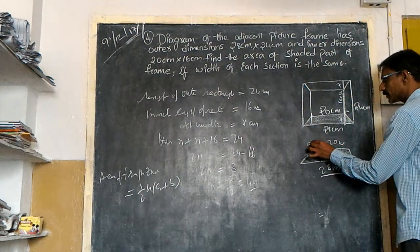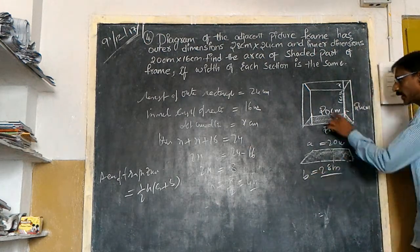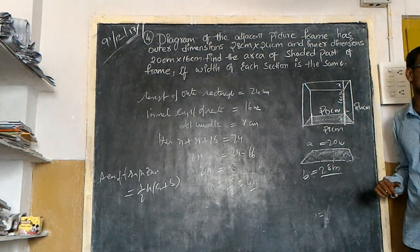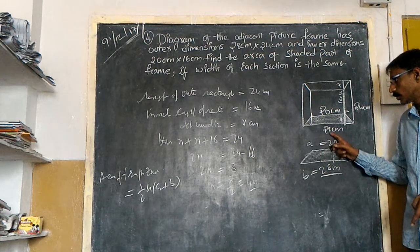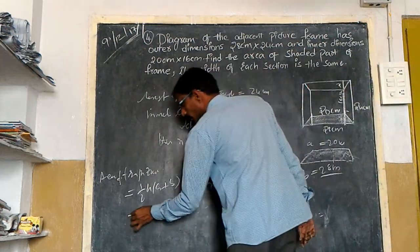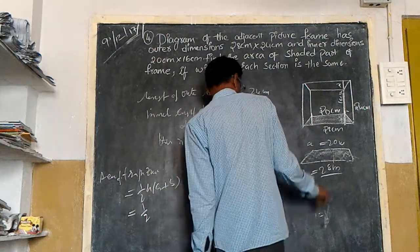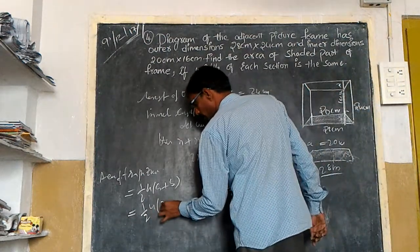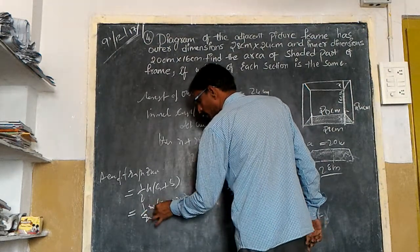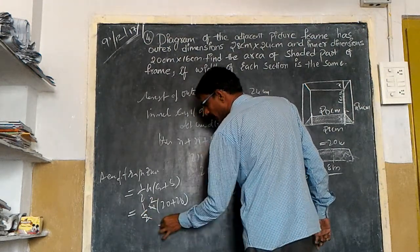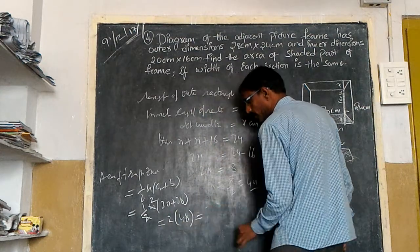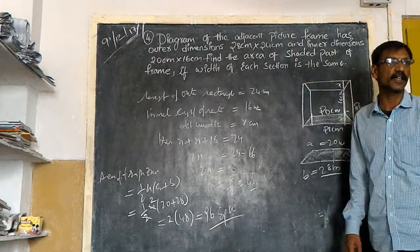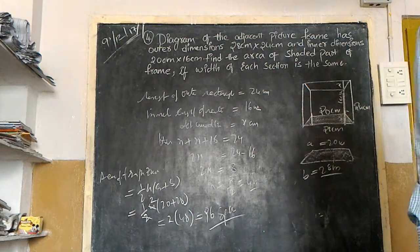My A is 20 and my B is 28. The inner breadth of the rectangle is 20 and the outer breadth is 28. The area is one-half into H into (20 plus 28), where H equals x equals 4. That gives us 2 into 48, which equals 96 square centimeters. Therefore, the shaded area of the frame is 96 square centimeters.